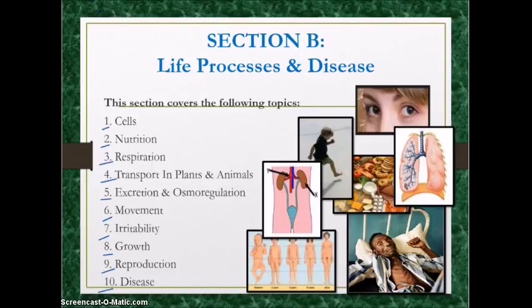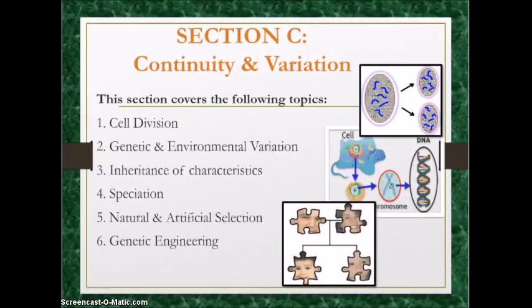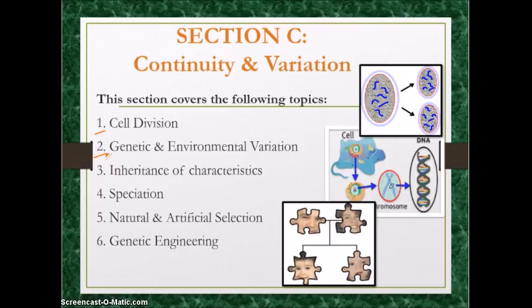Let's move on to Section C, the final section on the syllabus — Continuity and Variation. First, cell division: make sure you know the differences between mitosis and meiosis, their key features, and the functions of each type. Then, genetic and environmental variations, the differences between them, and the difference between continuous variation and discontinuous variation.